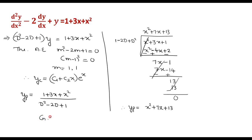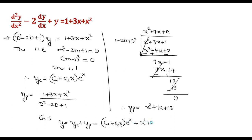The general solution is y equals yc plus yp, which is (c₁ plus c₂x)e^x plus x² plus 7x plus 13. This is the general solution.